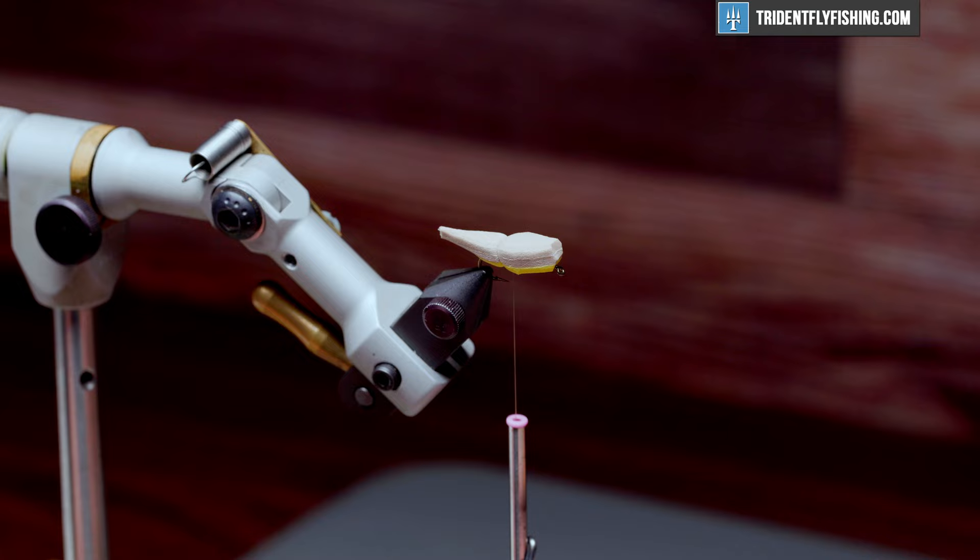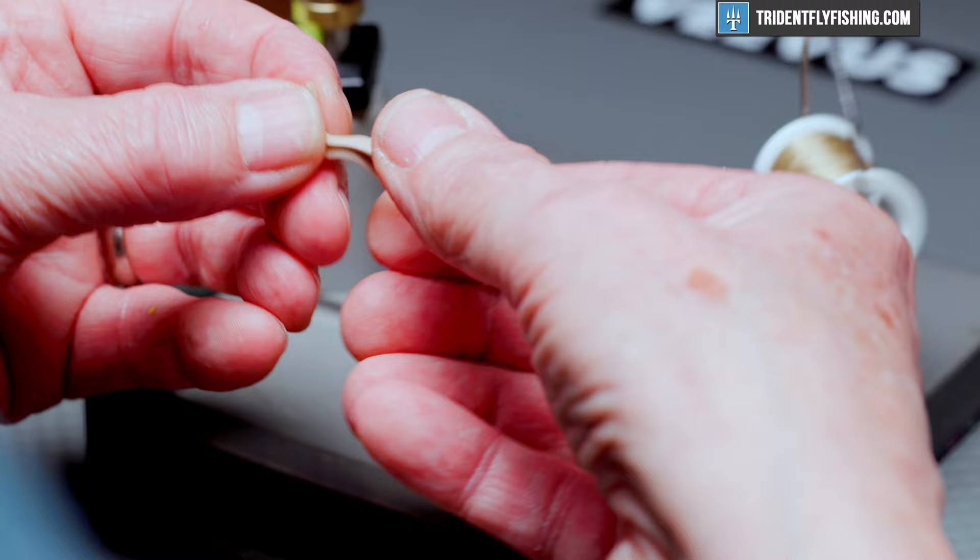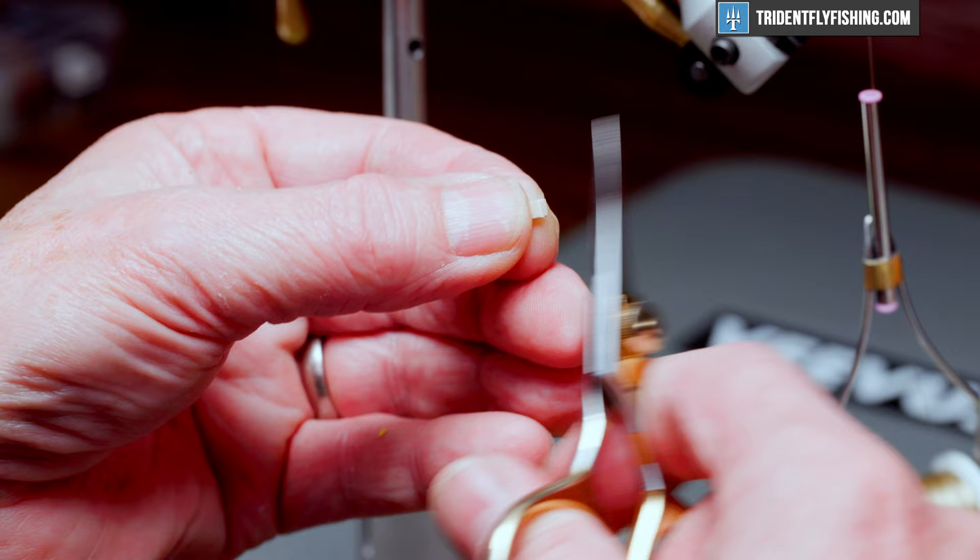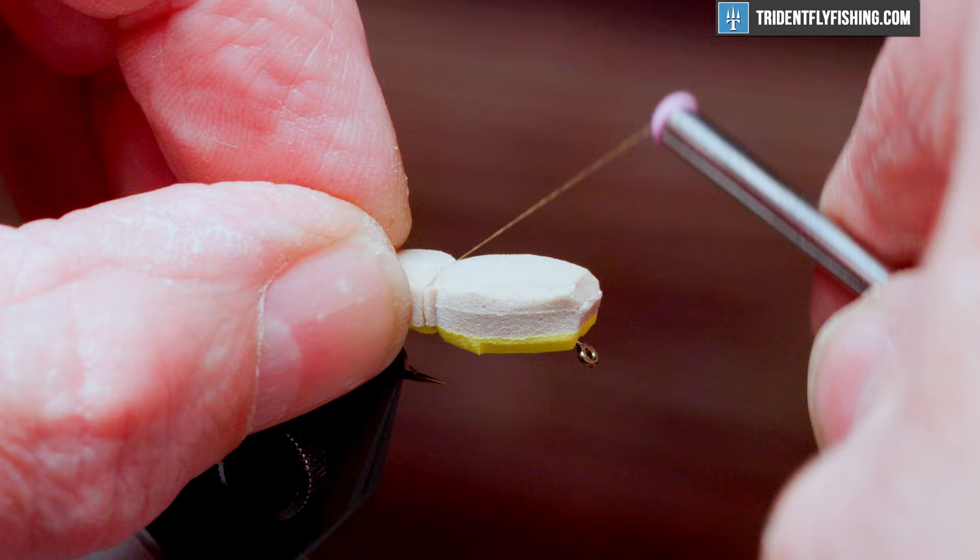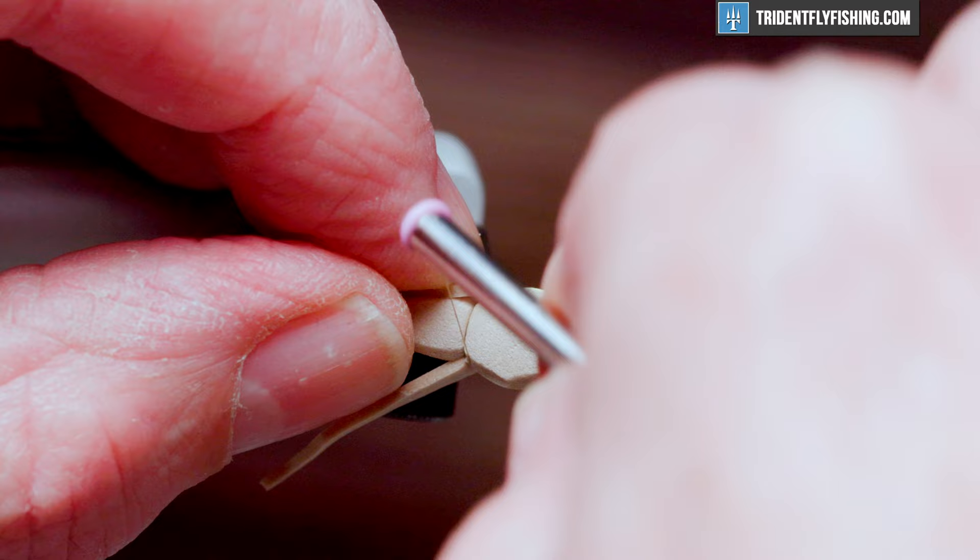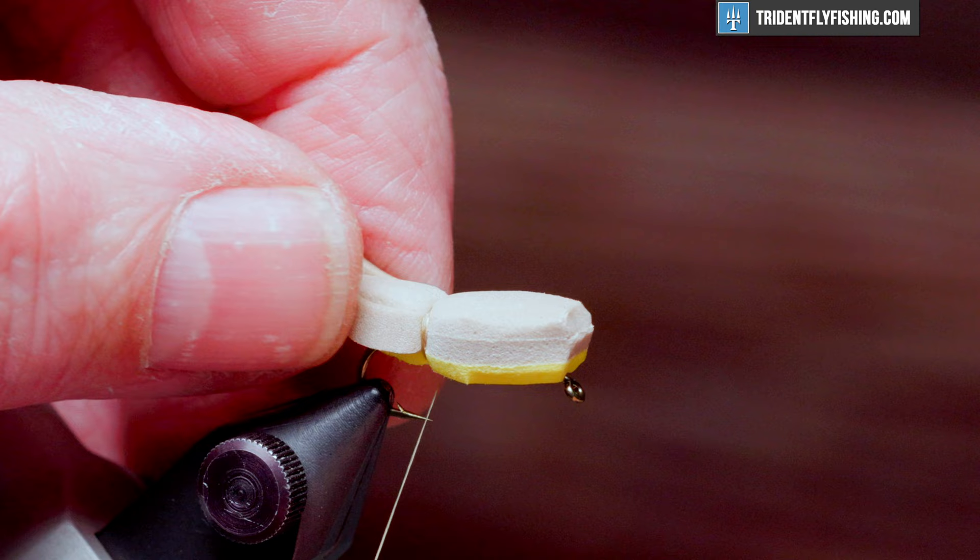And we'll take a couple of thread wraps to form our first segment of the body. Now the legs are going to go in next. I think they're just a little bit large. So I'm going to marry the two legs up and cut about a mil and a half off. Really easy to tie in. One on either side with just a couple of wraps. Don't worry if the legs splay out far like that. We'll fix that. There we go.